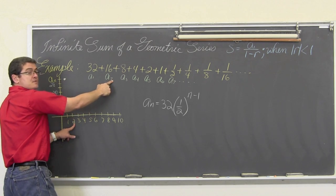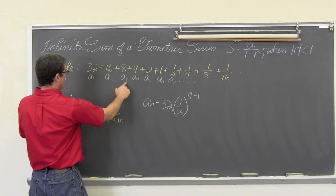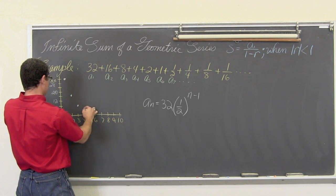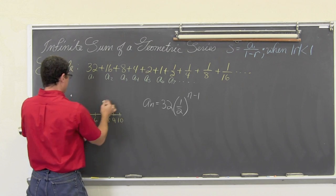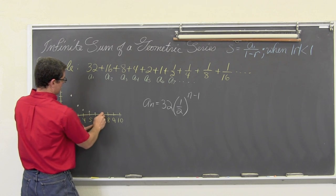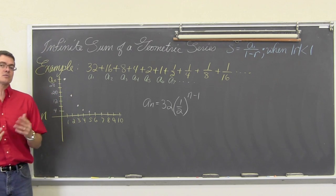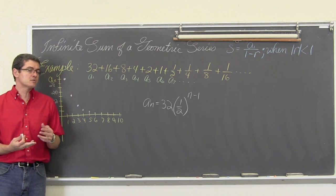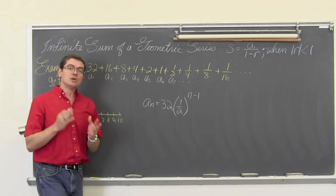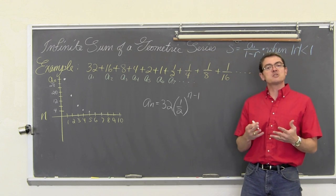When n equals 2, for a sub 2, we have 16, which is going to be right there. When n is 3, we have 8. My a sub 4 value is 4. My a sub 5 value is 2. My a sub 6 value is 1. And we can see that if I could connect these dots, which I cannot because our domain is all positive real numbers, but if I could connect my dots, you would see a graph that looks like, and actually is, except for the domain is not all real numbers, exponential decay.